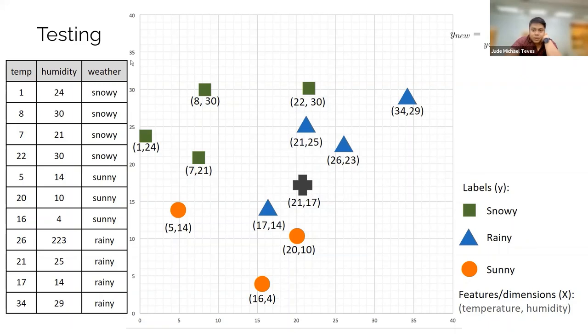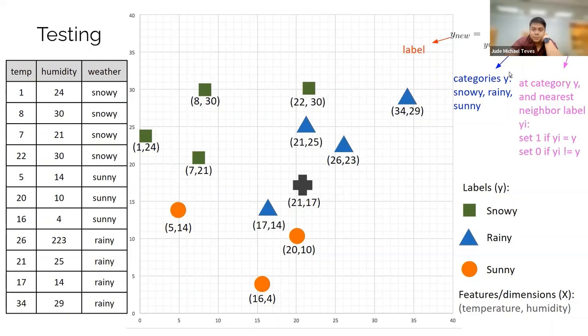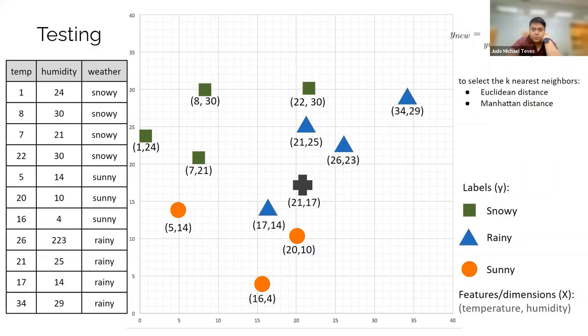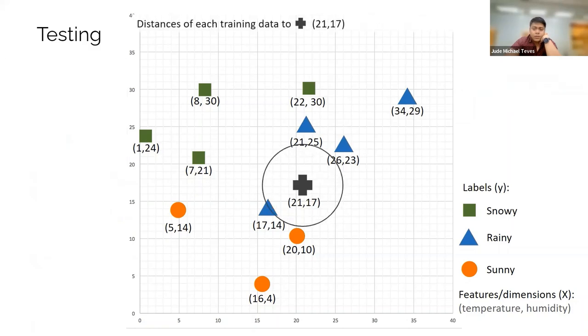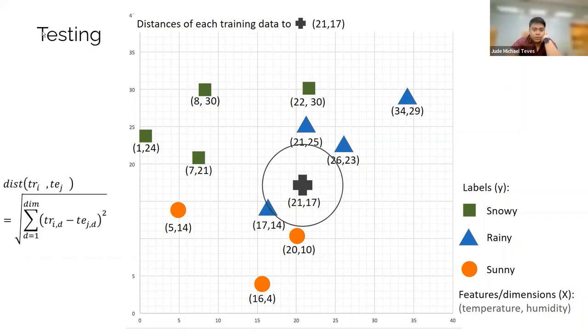So how do we determine the new class of this new input that we have? Basically, you're just getting the dominant class based on the nearest neighbors. So there's the label, the categories: snowy, rainy, sunny, you just get the max. So let's try to do this for all the nearest neighbors.